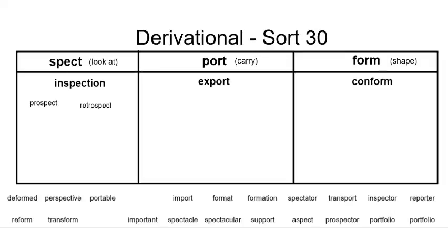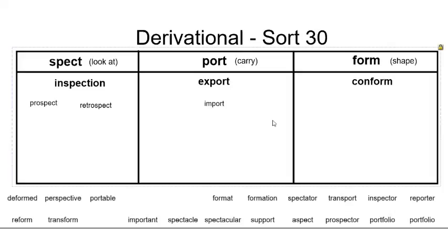Moving on to our next base word, we find the word 'port.' Port means to carry. When we add the prefix 'ex,' we add the meaning of 'out,' so export means to carry out. We can contrast that with the word 'import.' Import means 'in,' so import means to carry something in. We actually import goods from other countries, which means to bring things to buy into our country, and we also export certain things that we sell to other countries, meaning bringing something out of our country.